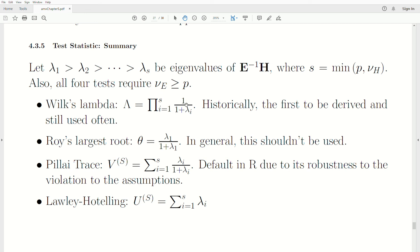Wilks Lambda is historically the first one to be derived and it's still often used. It's actually related to the likelihood ratio test, so it's still very powerful. Pillai's Trace is the default R test for MANOVA, and it has been shown to be pretty darn robust to the violations, to the assumptions. So, even if the violations are not 100% met, this still is a quite powerful test, and Lawley's Hotelling's is the sum of these eigenvalues.